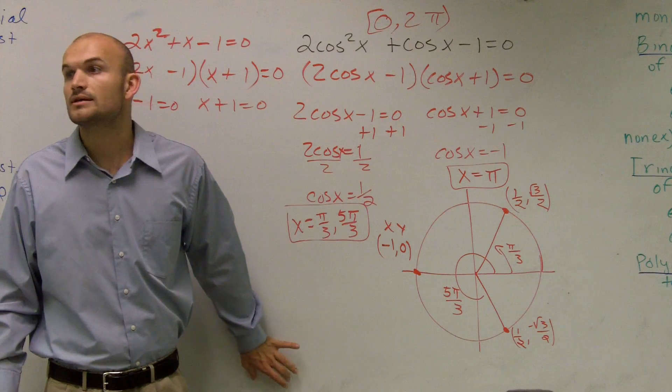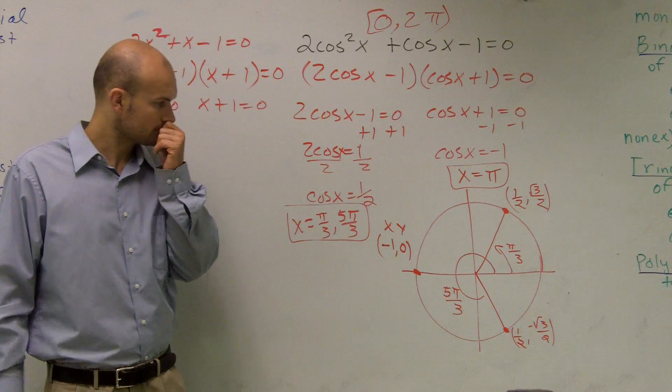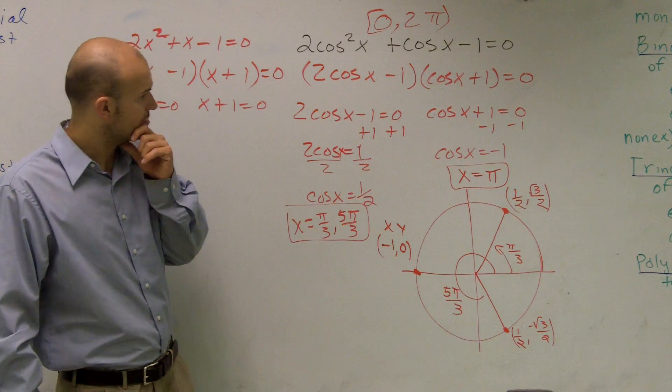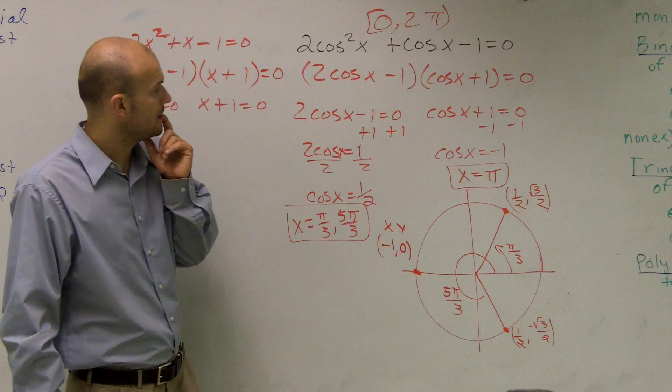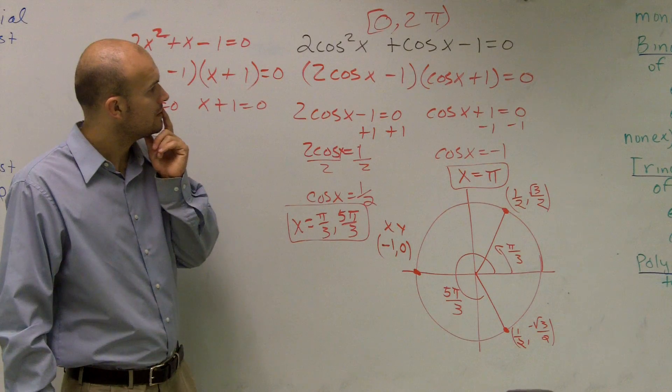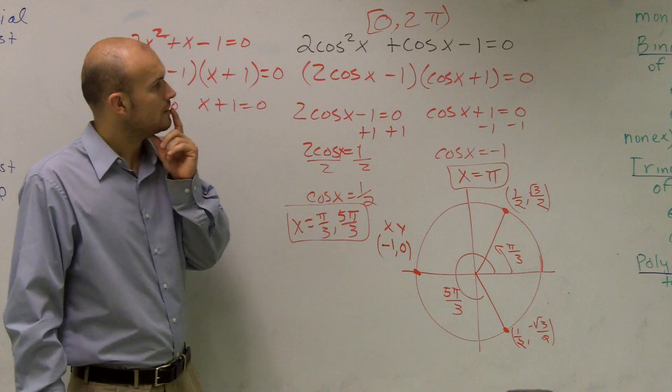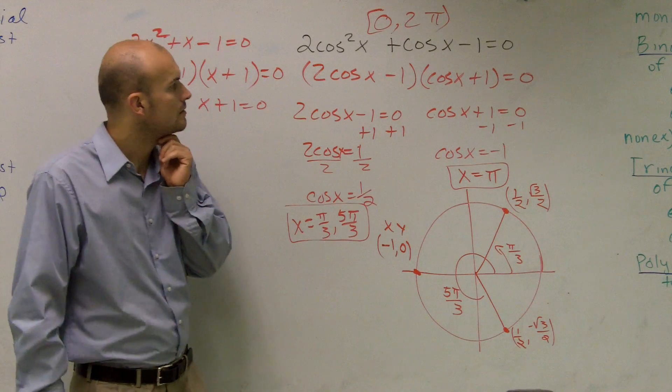Any questions? Yes? Why did you attach the negative 1 to the 2 cosine x and not the cosine x? Why did I attach the negative 1? Yeah, why did you do 2 cosine x minus 1 instead of 2 cosine x plus 1? Why did you choose to put the negative 1 there?